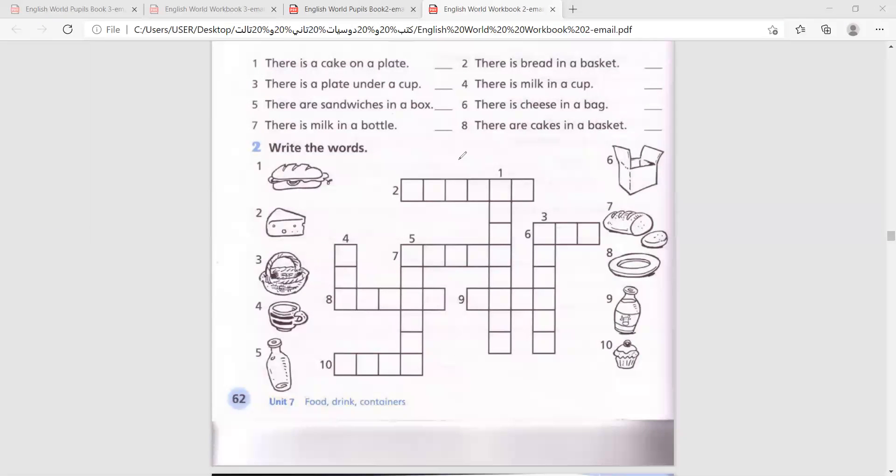Now, pay attention at something. When the number is on top, number one is on top, so we will start from top to bottom. But if the number is on the side, number two, it's on the side, we write it from left to right. One more example. Number three, it's on top, so we write it from top to bottom. But six, it's on the side, so we write from left to right. So now that we know how to do it, let's start with number one.